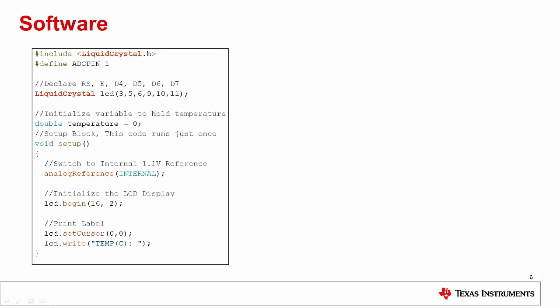Now we will step through the sketch loaded onto the Arduino Uno during the demonstration you just saw. So prior to our main body of code, we include the liquidcrystal.h library. This library makes controlling the generic 1602 LCD display from the demonstration extremely simple.